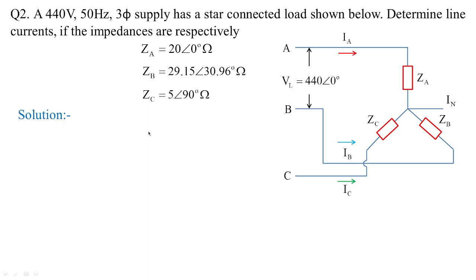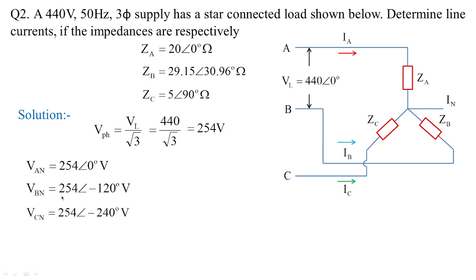In a star network, the phase voltage equals line voltage divided by root 3, giving 254 volts. The phase voltages are: V_AN = 254 at 0 degrees, V_BN = 254 at minus 120 degrees, and V_CN = 254 at minus 240 degrees. In a star network, line current and phase current are the same.